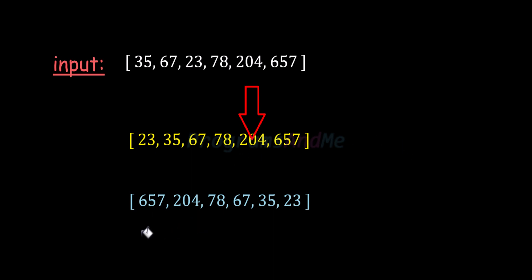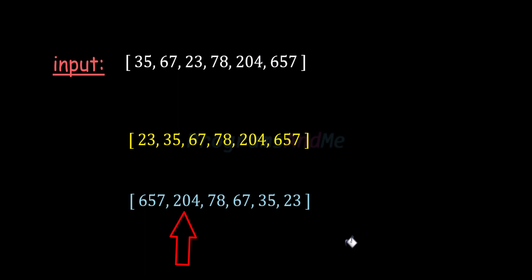If we sort the list in descending order, then the second element in the sorted list will be the second largest element of the given list. Here you can see the example — easy, right? So let's write the program.